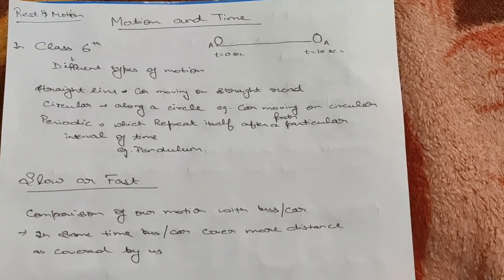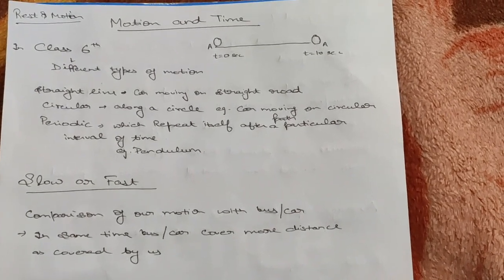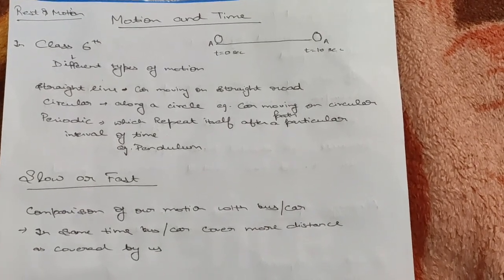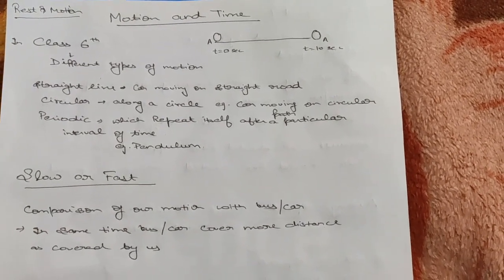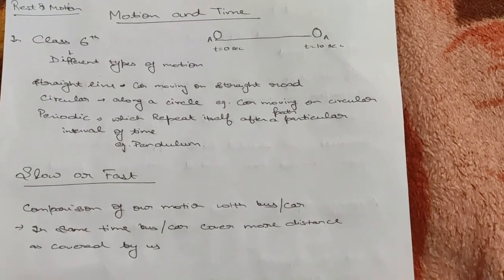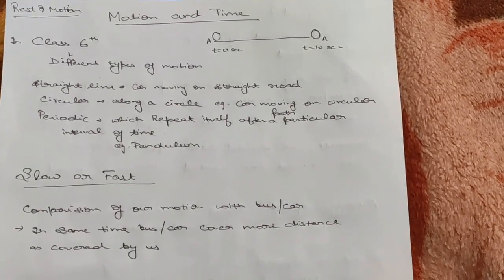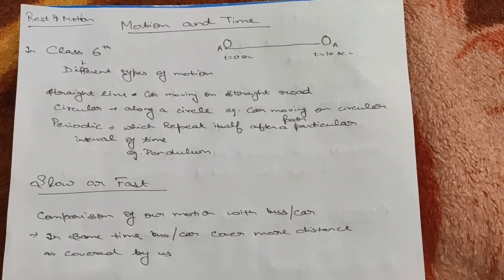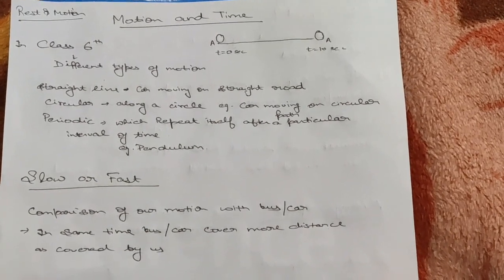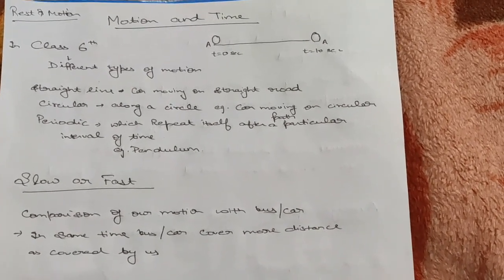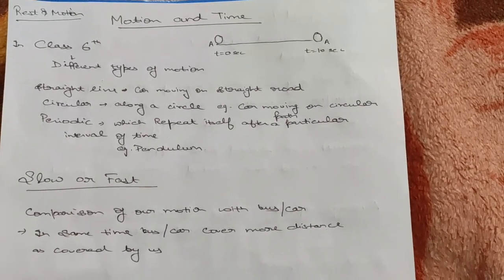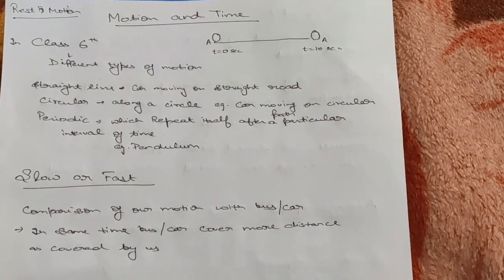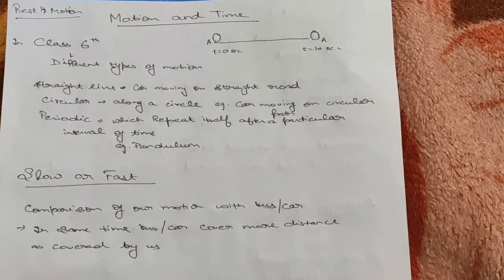After this discussion of motion, we come to the question: how can we judge whether motion is slow or fast? If we compare our motion with a bus or a car, in the same time a bus or car will cover more distance than us. But slow or fast can only be said with respect to each other. If two cars are moving, one car is slow with respect to the other and one is fast with respect to the other. But what if a single object is in motion — how can we compare slow or fast?